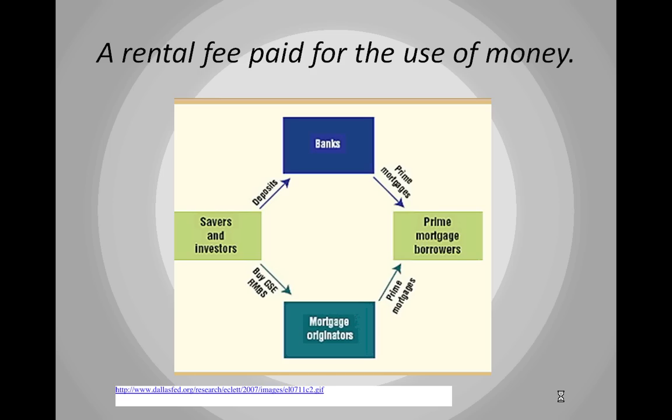We're talking about a rental fee paid for the use of money. On the screen is a graphic on borrowers and savers — savers and investors on one side and prime mortgage borrowers on the other. This is for mortgage loans, but it could work for any kind of lending.